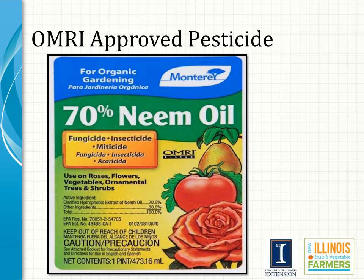Here we have the OMRI approved neem oil pesticide. You can also see that an OMRI approved pesticide does not look any different than a pesticide that isn't OMRI labeled. It still must list its active ingredients, its registration number, and additional cautions that must be taken. If you were to look at the back of this neem oil bottle, you would also see similar directions and cautions as a conventional product. Both OMRI approved and conventional pesticides look no different in their labeling, except for that OMRI listed seal.